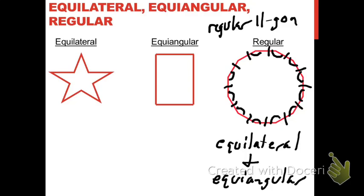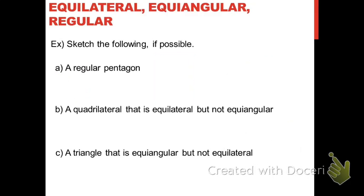All right, now let's wrap that idea up. I have some more sketches that I want you to make. Do the best that you can. I'm not looking for these to be perfect. But I would like you to sketch a regular pentagon, if it's possible. I'd like you to sketch a quadrilateral that is equilateral but not equiangular, if that's possible. And I'd like you to sketch a triangle that is equiangular but not equilateral. See what you can come up with.